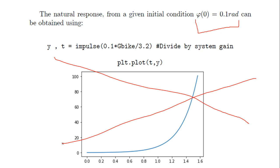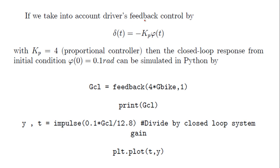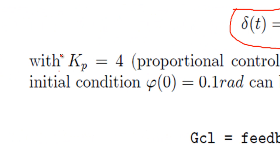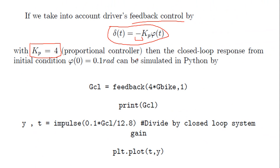Now imagine we take into account the driver's feedback control. The steer angle delta applied to the front fork will be proportional to the roll angle phi through a constant, with a minus sign. If we take proportional constant kp equal to 4, we now have a closed loop system instead of an open loop system. The closed loop transfer function is computed using the FEEDBACK instruction.